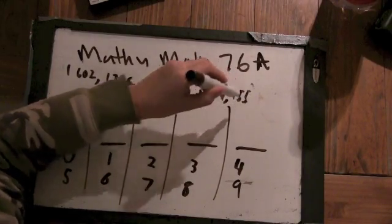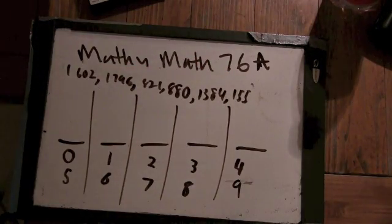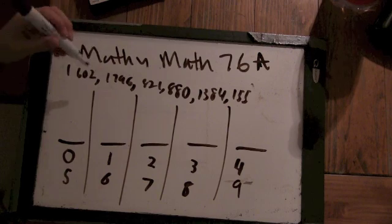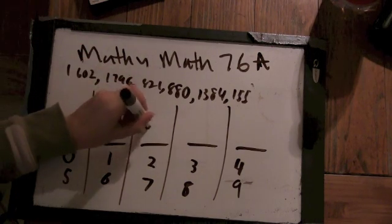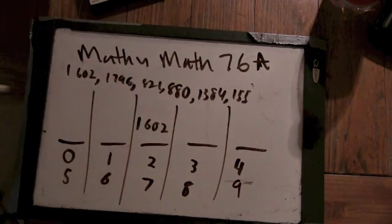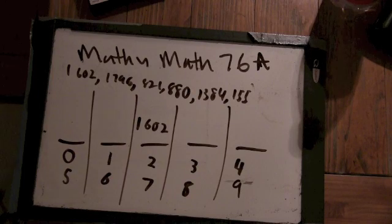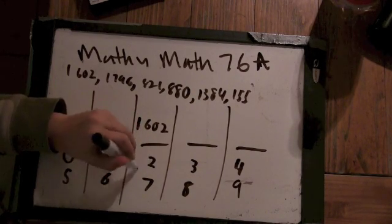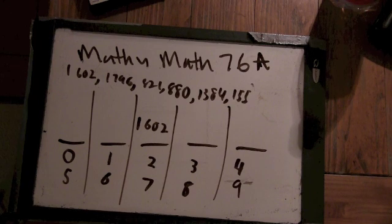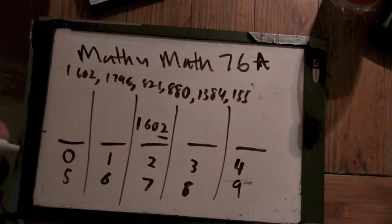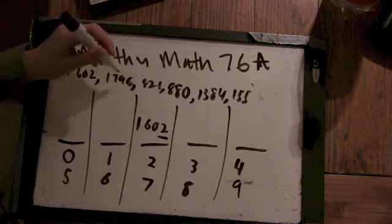And why don't you show what you mean with your buckets here. So where does 1602 go? Well, it would go in here. How come? Because it has a two in it, this is a two or seven bucket. But it also has a six in it. Yeah, but we're just looking at the last digit. Ah, just looking only at the last digit. Okay.